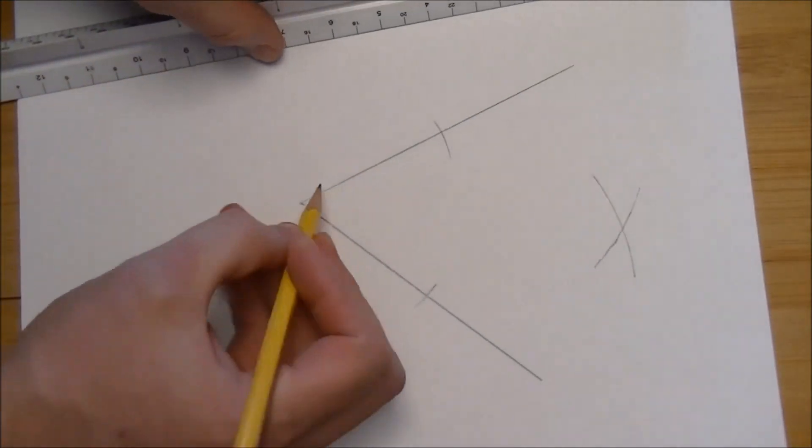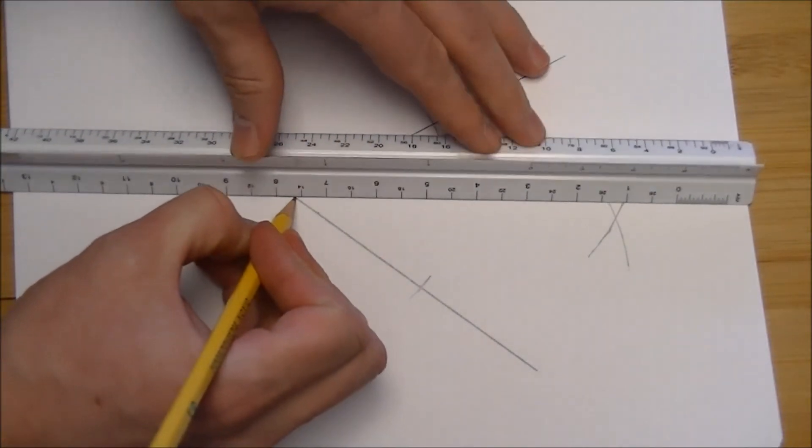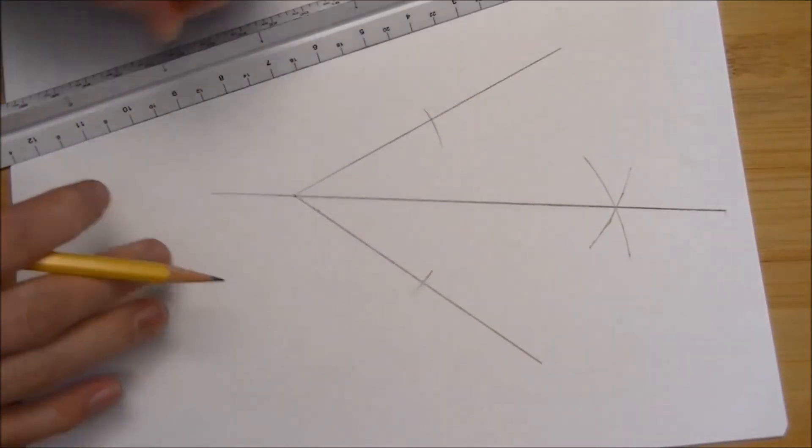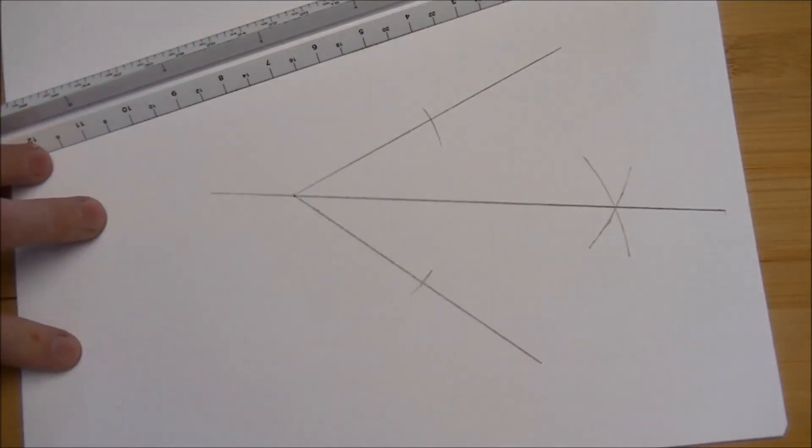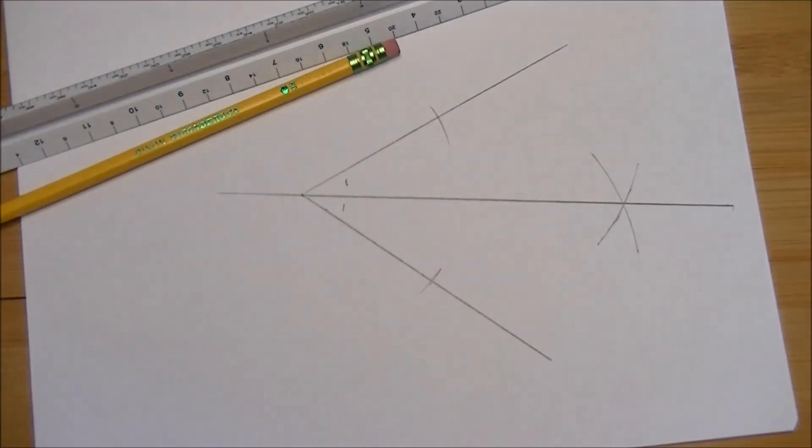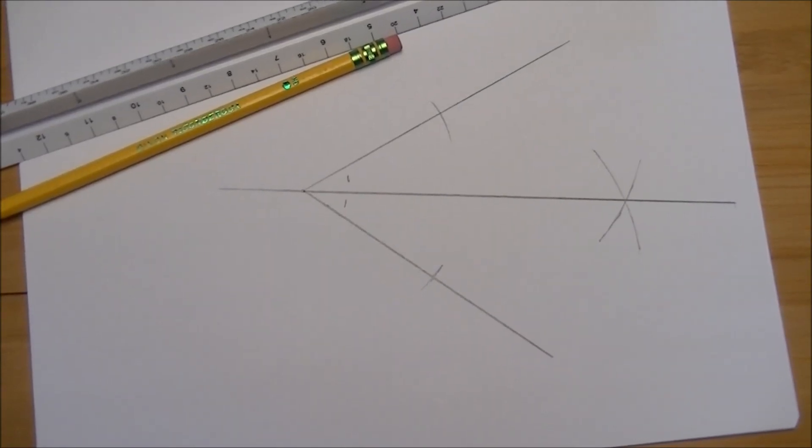And using the vertex and the intersection that you made out there, you're able to bisect this angle in two exactly congruent angles.